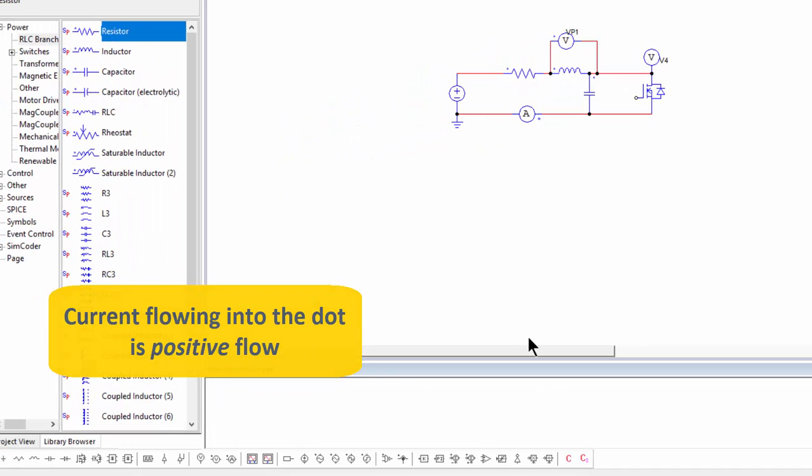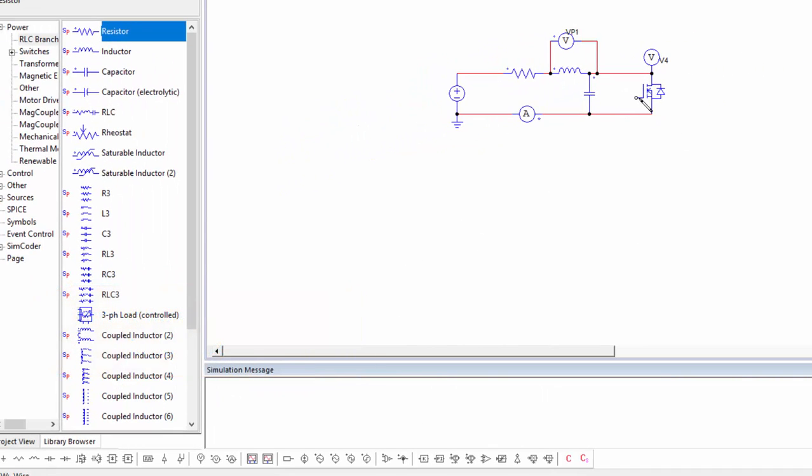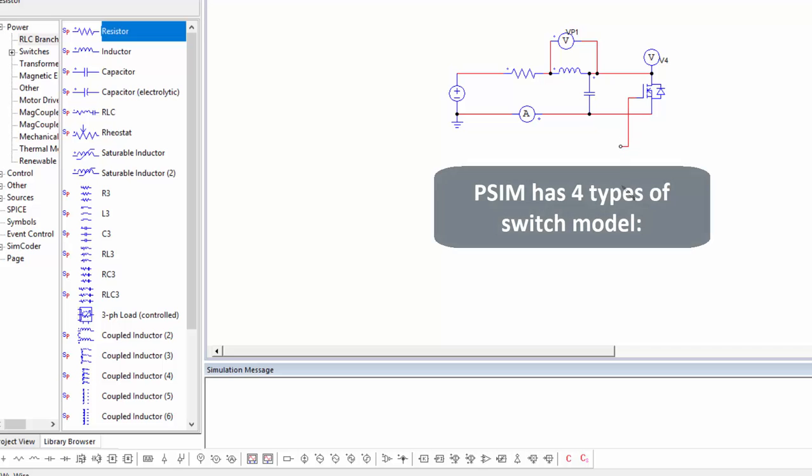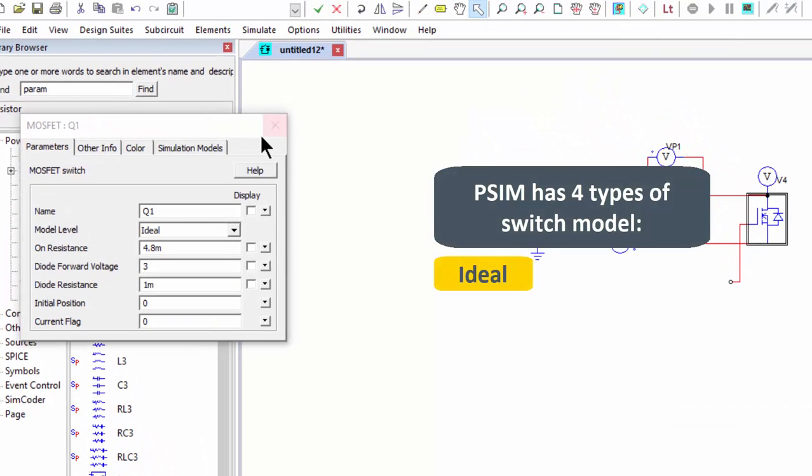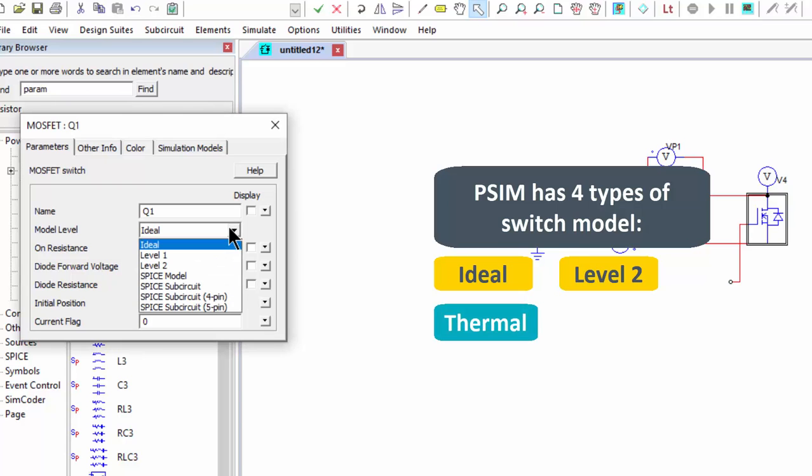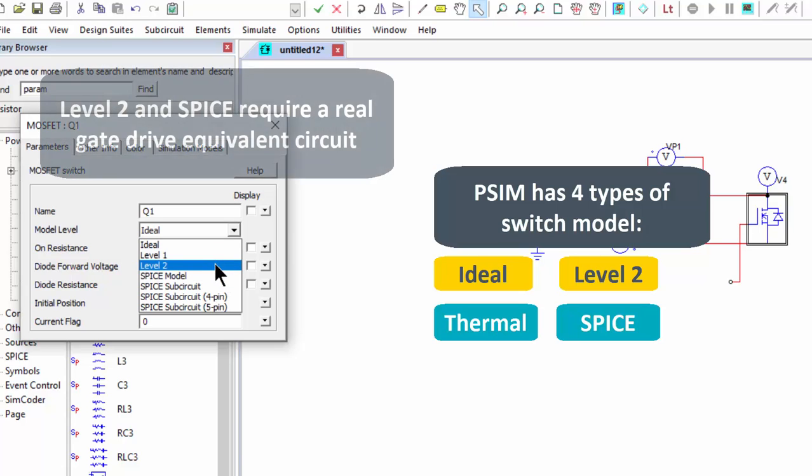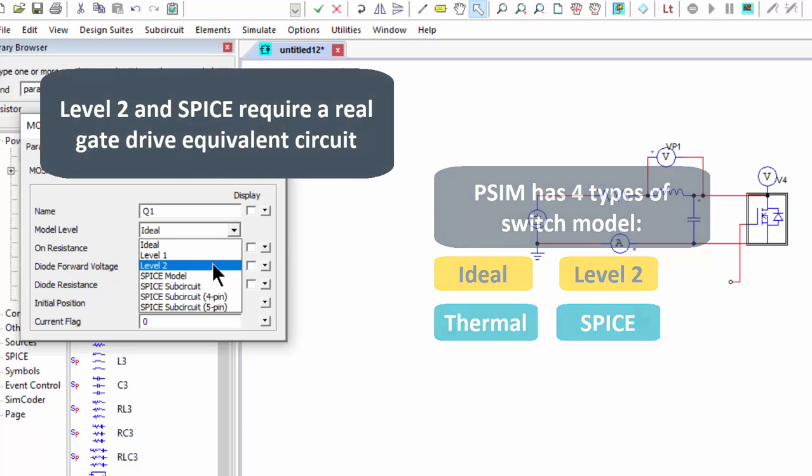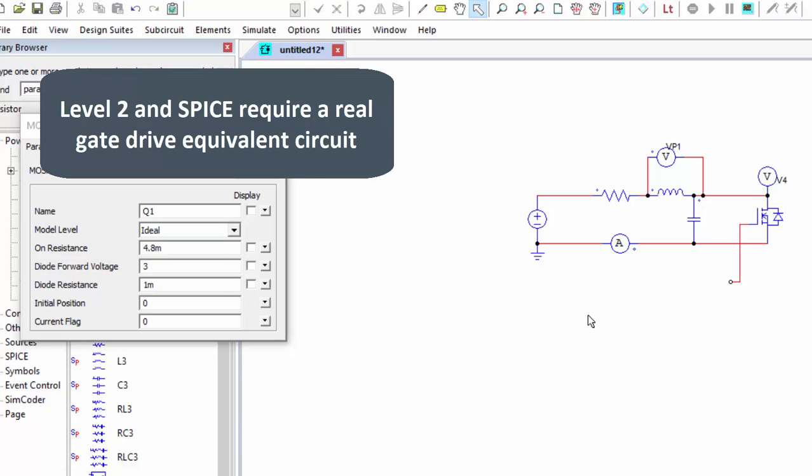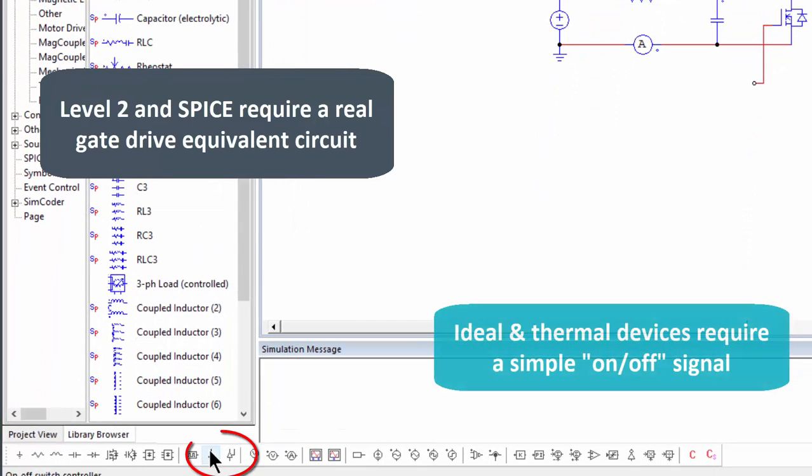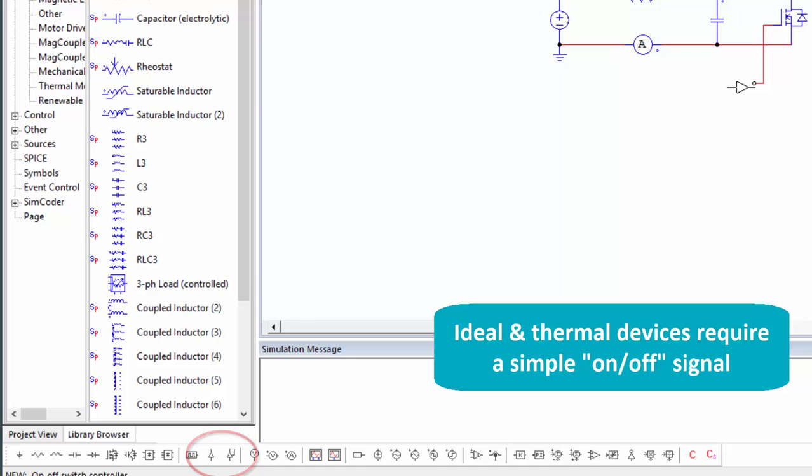And let's also then set up a gating circuit onto this device. So this is an ideal device in PSIM. Switch models in PSIM are startup as ideal. You can go to more realistic models like Level 1, Level 2, or SPICE. With ideal switches, we can get away with interfacing them using our on-off switch control element here.